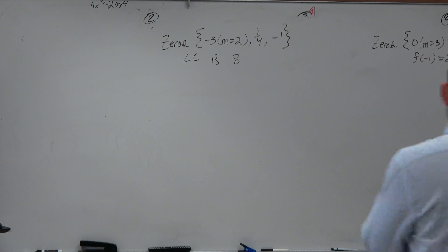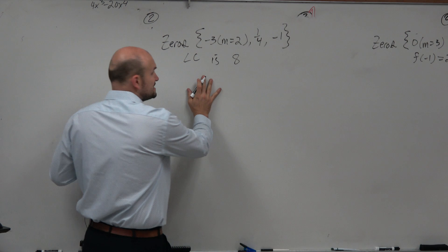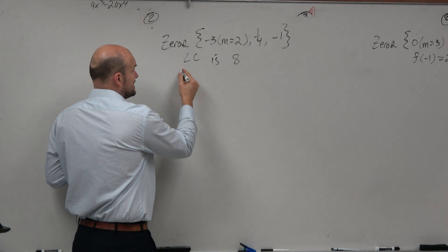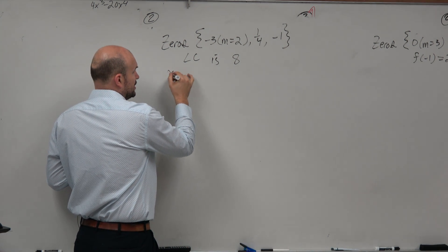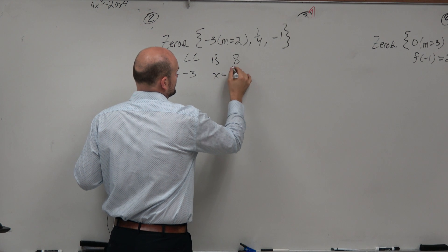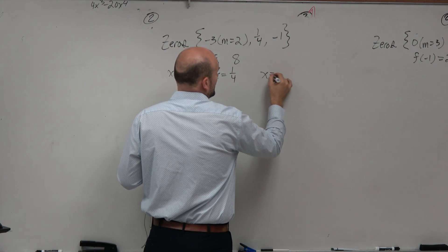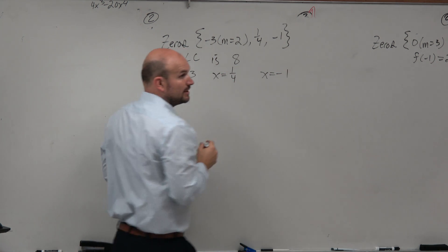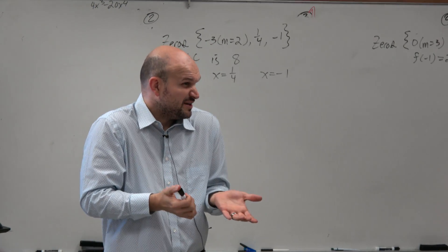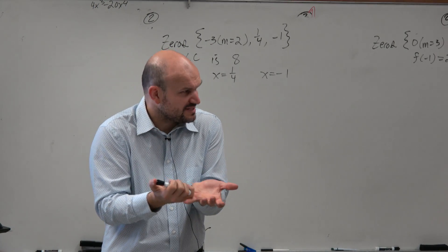As we discussed, as I've written in there, if these are zeros, that means we can write them as equal to x. Negative 3, x is equal to 1 fourth, and x is equal to negative 1. Now, how did we get those numbers from the zeros?